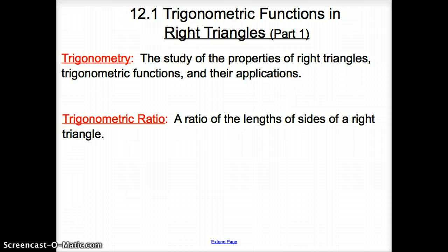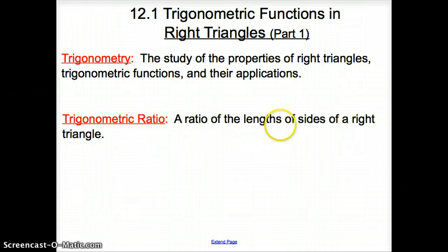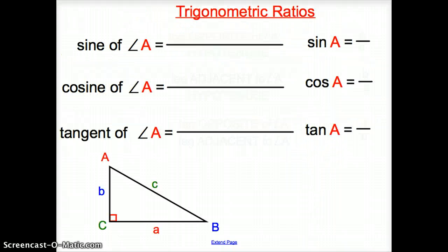The next vocab word we have is a trigonometric ratio, and that is a ratio of the lengths of sides of a right triangle. Let's get into some of those trigonometric ratios.